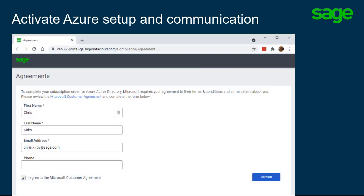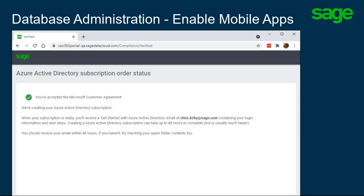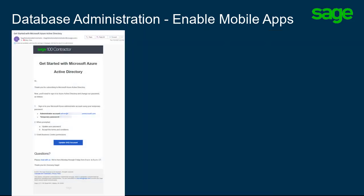The Sage Subscription Agreement page displays. Type the first and last name of the primary contact for the Azure subscription. The email address is where the follow-up email with credentials is sent. The phone is optional. Select the box that you agree and then confirm. A message displays with the order status that states you'll receive a Get Started with Azure Active Directory email at that address. That email contains login information and next steps.